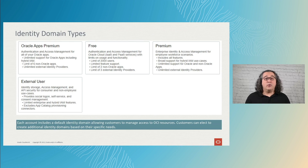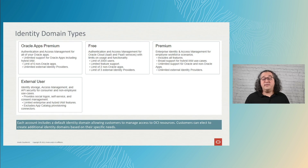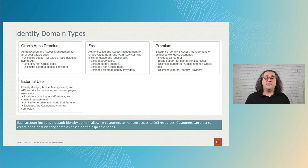If you are standardizing on Oracle as your enterprise identity and access management provider, this is the identity domain that you will want. It will help you manage workforce authentication and access to all your Oracle and non-Oracle applications, whether they are SaaS apps, on-premise enterprise apps, or apps that are hosted in the cloud. The external user identity domain type offers the same capabilities as the premium, but in this case, you want to provide IAM services to non-employee use cases, consumer-facing IAM, and custom app developers.